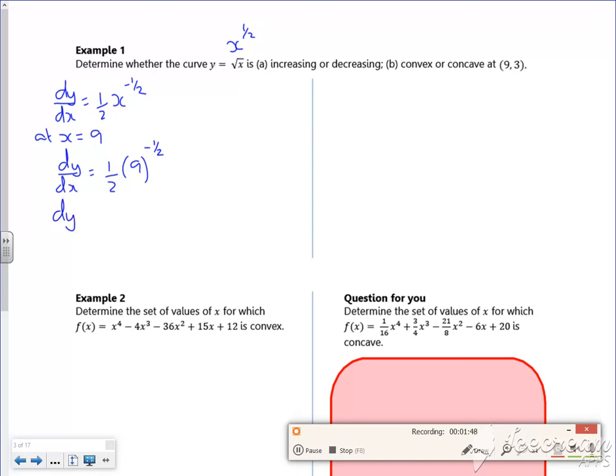So dy by dx is going to be a sixth. So yours has got (9,3), mine's got (3,9). So dy by dx is a sixth, and then as dy by dx is greater than 0, therefore increasing. There, that's okay.